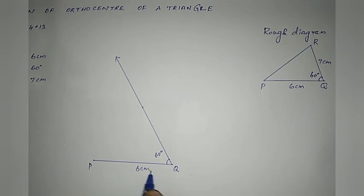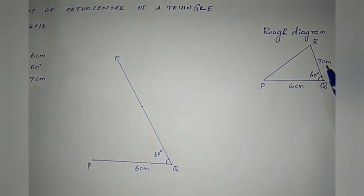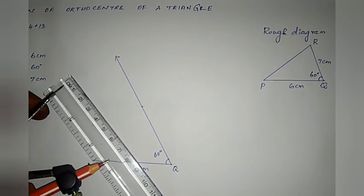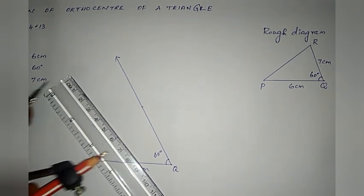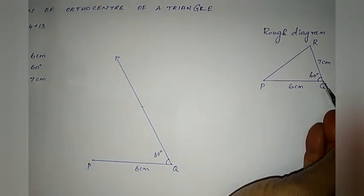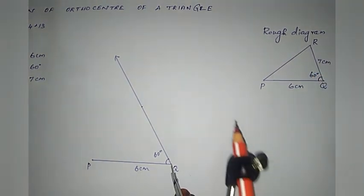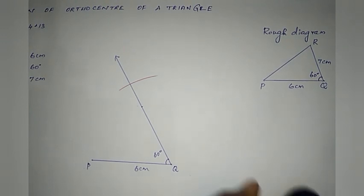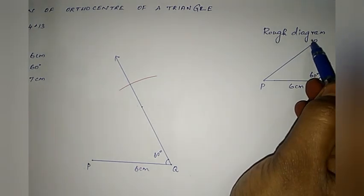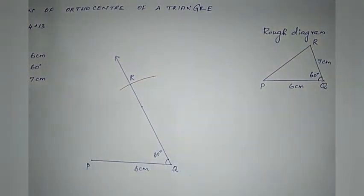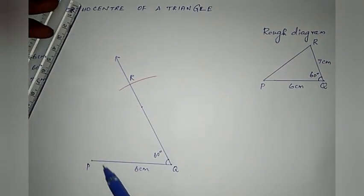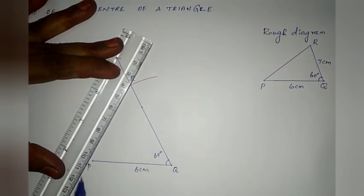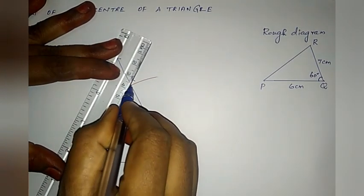Drop Ray QX and mark the 60 degree angle at Q vertex. Now we have the first side of 6cm. For the next side, from Q point cut the QX ray at 7cm. Measure 7cm on the scale and cut the ray at Q point. This new point will be R. Connect point P to R to complete the triangle.